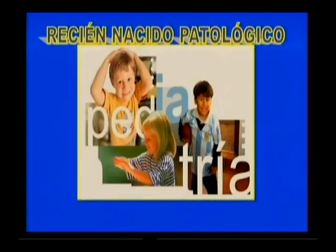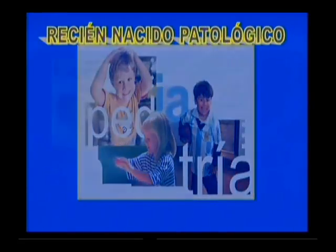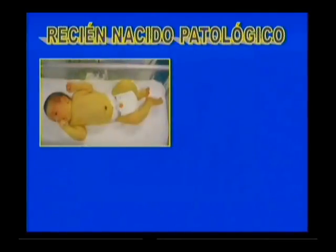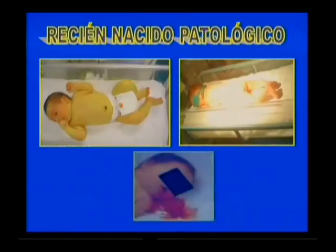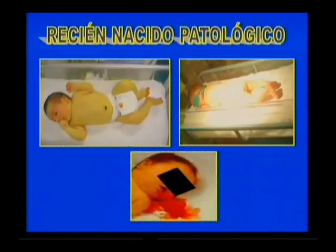En esta semana continuaremos el estudio del recién nacido patológico y específicamente abordaremos las afecciones que se acompañan de ictericia y de otro grupo de manifestaciones clínicas, constituyendo objeto de estudio en el día de hoy la enfermedad hemolítica o isoinmunización por RH y ABO, además de los contenidos correspondientes a la enfermedad hemorrágica del recién nacido.